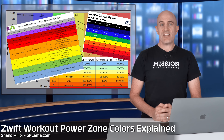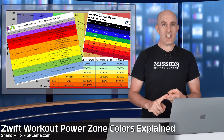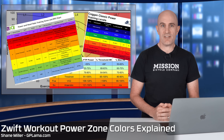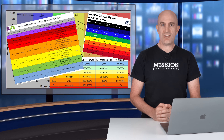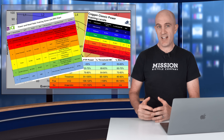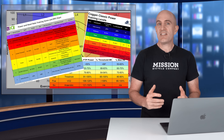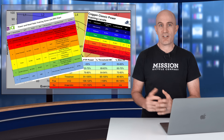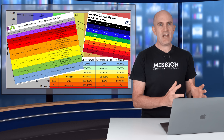Workout zone colors are used quite a lot. You'll see them on head units, in training software, and in analysis software. They're a good visual indication of the effort you've done or are about to do. The colors used are typically universal — green is easy, up to red which is quite hard.